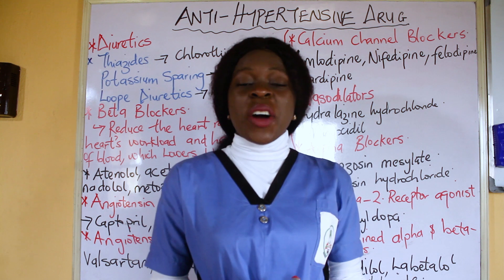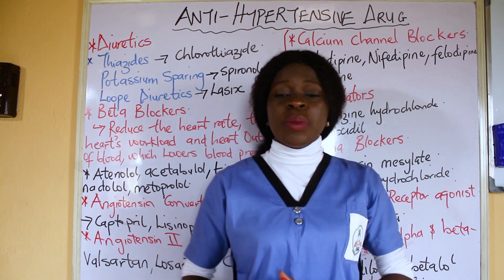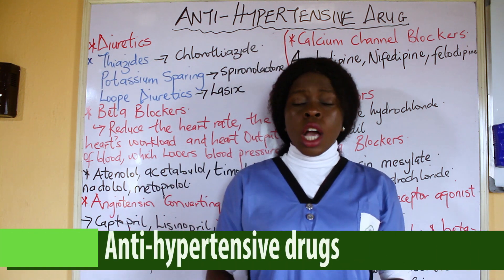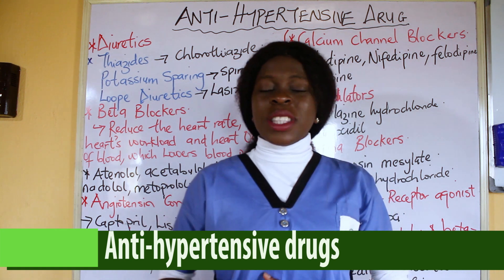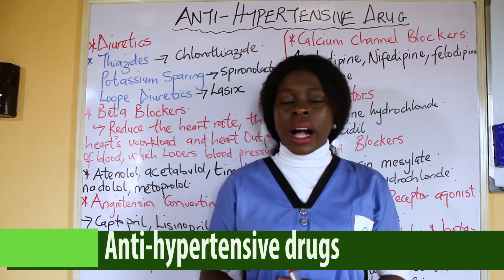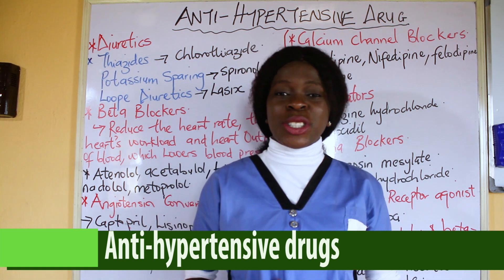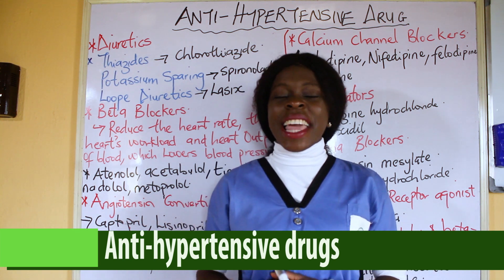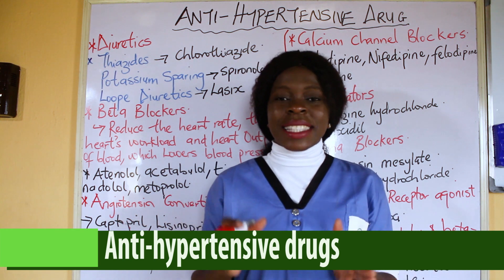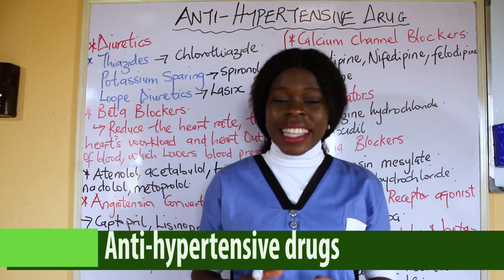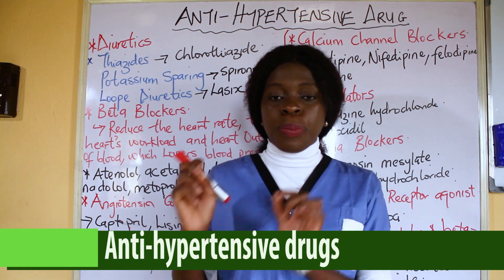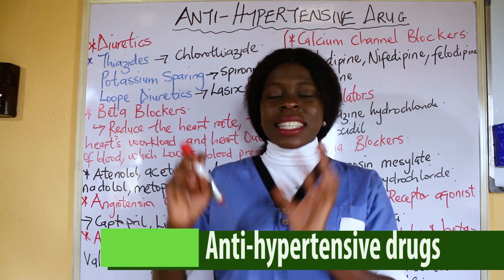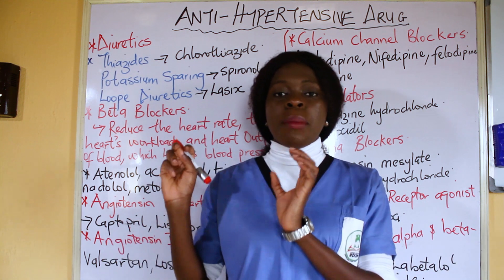Alright, welcome back. Today we are going to be talking about antihypertensive drugs. But before we go into antihypertensive drugs proper, what is hypertension? Hypertension is said to have occurred when there is a persistent, consistent elevation of the blood pressure above 140/90 mmHg.